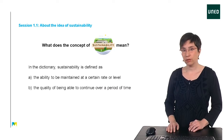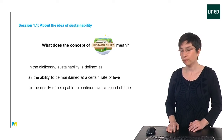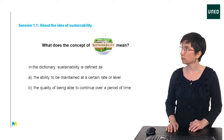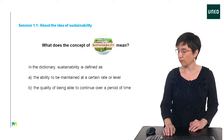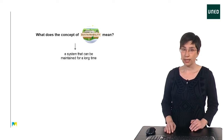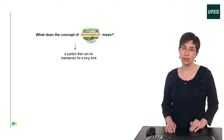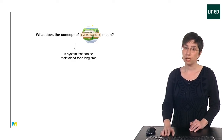We will start with an introduction to sustainability. What does sustainability mean? In the dictionary, sustainability is defined as the ability to be maintained at a certain rate or level, or the quality of being able to continue over a period of time. Regarding the environment, sustainability is the quality of causing little or no damage to the environment, and therefore able to continue for a long time. Sustainability expresses the quality of a system to survive.